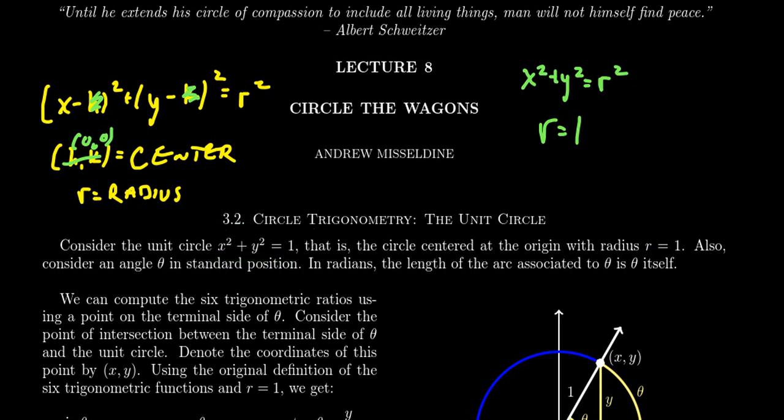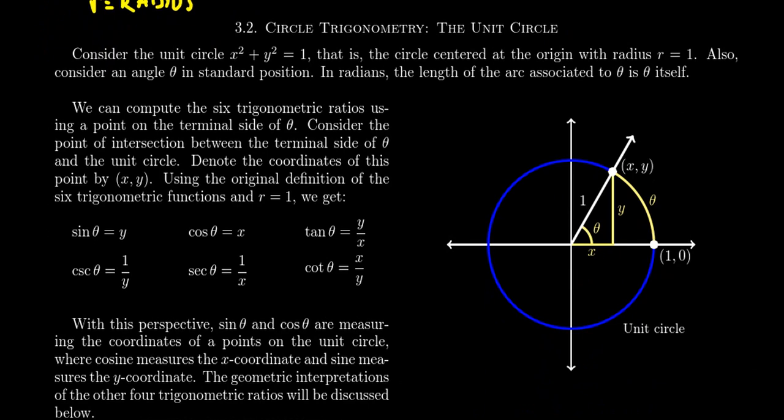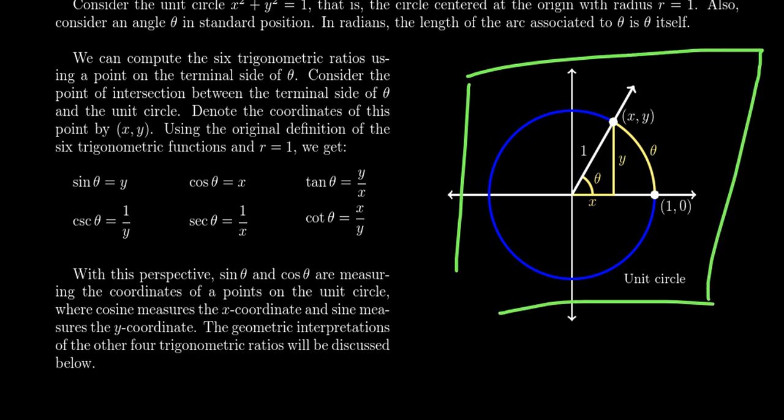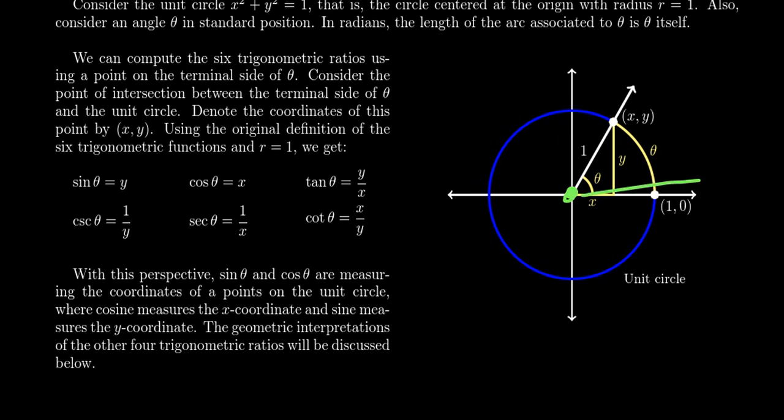And so using the unit circle, we can actually describe the six trigonometric ratios in the following manner. So notice the picture we see here on the right of the screen. This is a diagram of the unit circle. You'll notice that the center of the circle is the origin. That is the point where the x-axis and the y-axis intersect themselves. And this circle will also have a radius of 1. So every radius of this circle will be exactly 1 unit away from the origin.